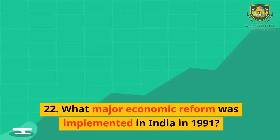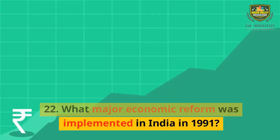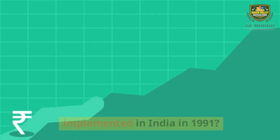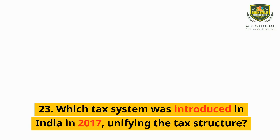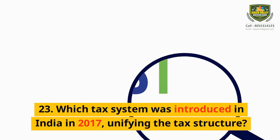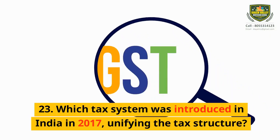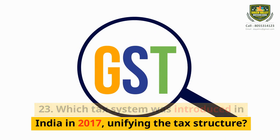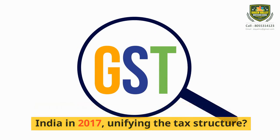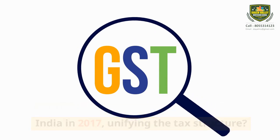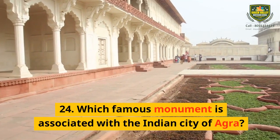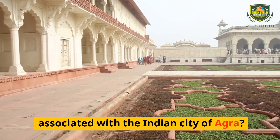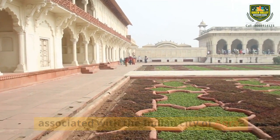Question 22: What major economic reform was implemented in India in 1991? Question 23: Which tax system was introduced in India in 2017, unifying the tax structure? Question 24: Which famous monument is associated with the Indian city of Agra?